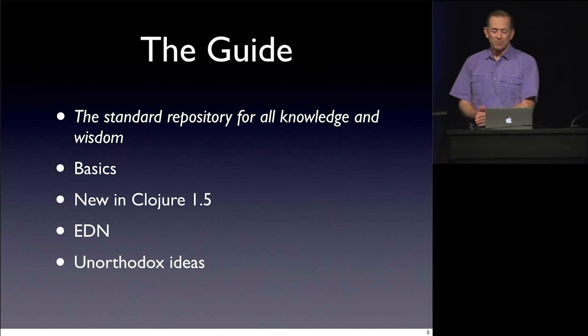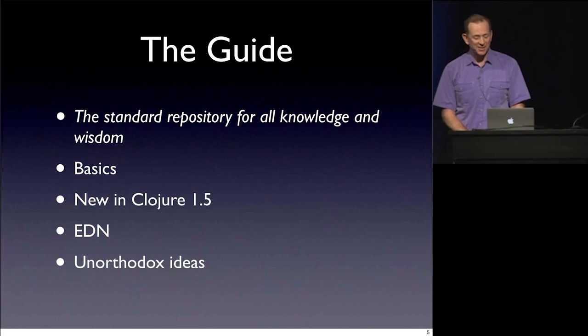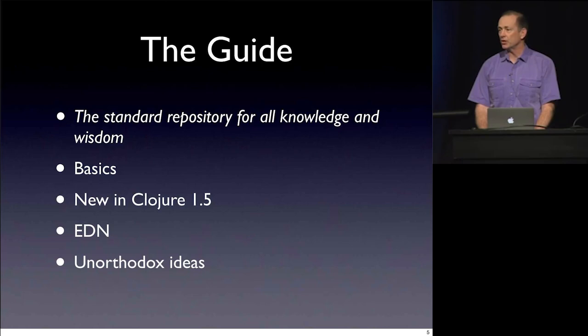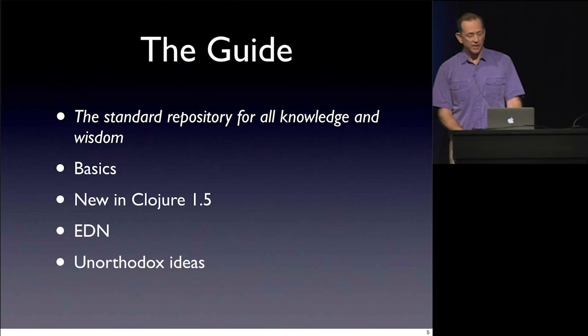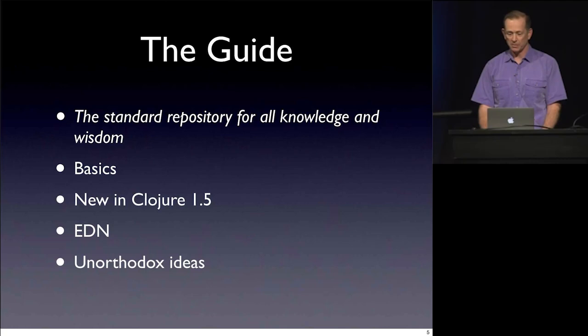The guide aims to be the standard repository for all knowledge and wisdom, and in this half-hour talk we're going to try to get most of that covered. We'll start with the basics about tag literals and data readers, talk about a few things new in Clojure 1.5, cover EDN — which is kind of like JSON but for Clojure — and at the end talk about a few unorthodox ideas, some things you can do with data readers that maybe Rich didn't intend you to do.